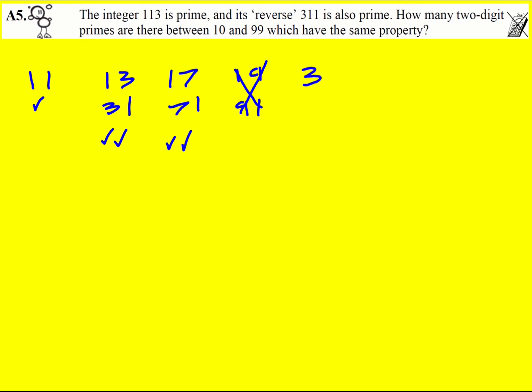We've already got 31 so just got to think are there any others. 37 is a prime and so is 73. Okay that's going well.